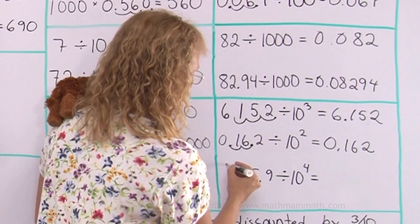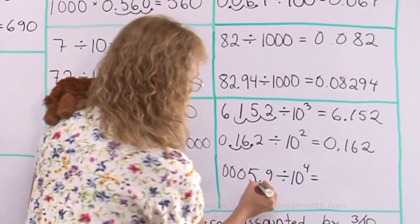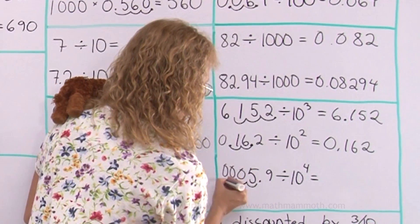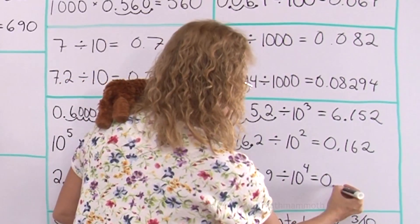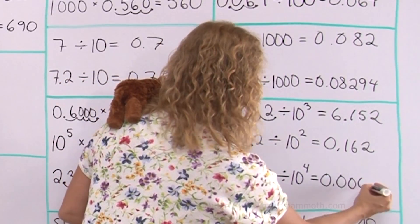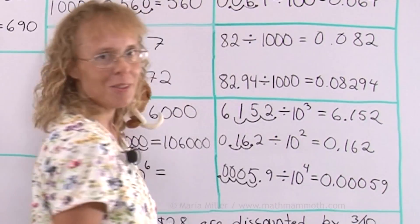And here, let's put zeros here so we can move the decimal point four steps. One, two, three, four. 0.00059.